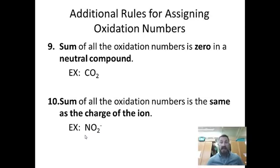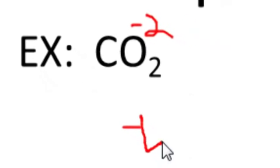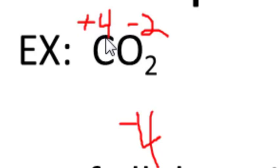The sum of the oxidation numbers is zero in a neutral compound. In CO₂, oxygen is negative two; two oxygens contribute a negative four total. Carbon must be positive four to balance. Combining positive four from carbon and negative four from the two oxygens gives a net charge of zero — a neutral compound.